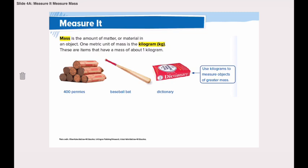We have 400 pennies, a baseball bat, and a dictionary book. All three of these items are big items — we measure them in kilograms. All of them have a mass of about one kilogram.